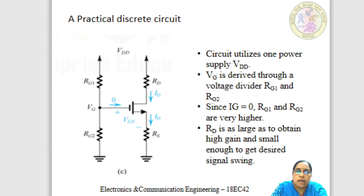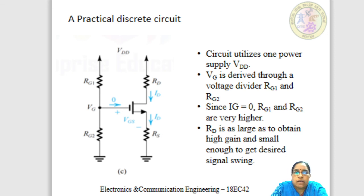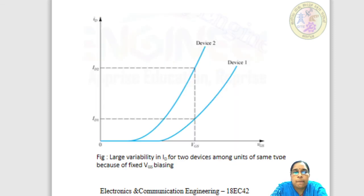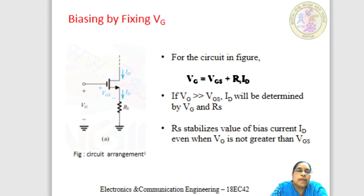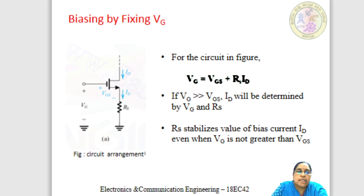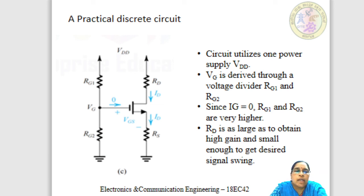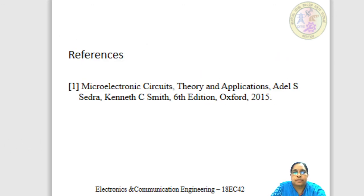In this session, we have discussed the biasing circuitries available for MOS amplifier circuits — the disadvantages of the first technique of fixing VGS, and how changing the scheme to fixing VG derived through an external voltage divider improves biasing. In the next session, we will see through an example how this practical discrete circuit successfully gives a good bias to the MOSFET amplifier circuits. Thank you.